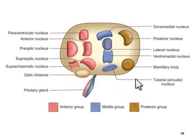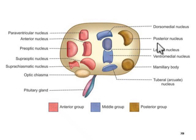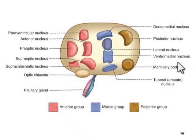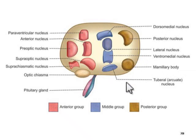The next is the posterior group of nuclei, also known as the mammillary group of nuclei. Here you can see the brown-colored nuclei are the posterior or mammillary group. This posterior group includes mainly the posterior nucleus and the mammillary body.